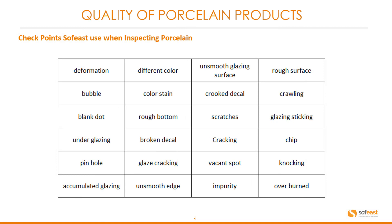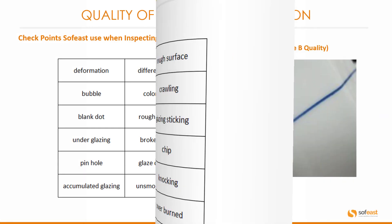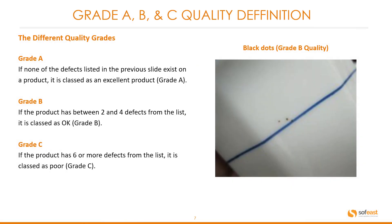Here is a list of the checkpoints Southeast use when inspecting porcelain. I'm not going to go through each one of these but you can pause to check this list for yourself. So grade A: the porcelain can be classed as grade A if none of the defects listed in the previous slide exist on a product. It is then classed as an excellent product or grade A.